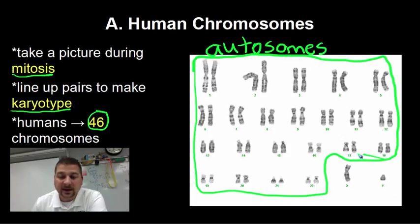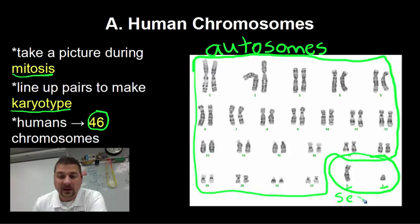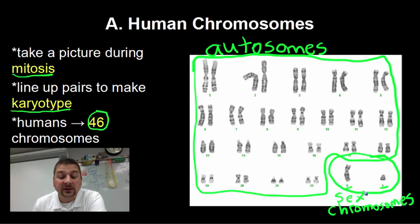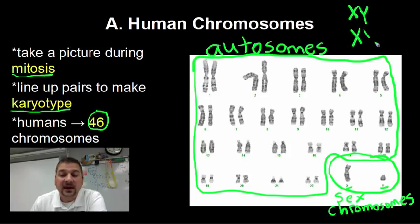The last little pair — notice there's an X and a Y chromosome — these are the sex chromosomes. There are genes, especially on the Y chromosome, that determine maleness and femaleness. A male is going to be XY and a female is going to be XX.